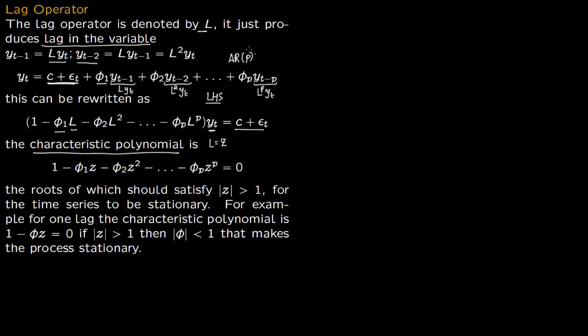For your AR process to be stable — meaning that as time goes on, the process does not go to plus or minus infinity — you first find its characteristic polynomial and then find the roots of that polynomial. For stability, the absolute value of each root must be greater than 1.